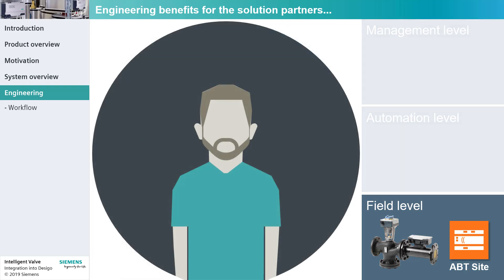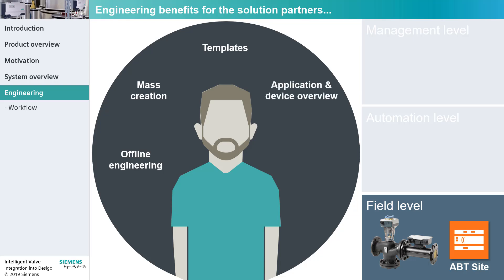Solution partners can benefit from the following features of ABT-Site: offline configuration without a physical connection to the device; mass creation to prepare the network configurations for a larger number of intelligent valves simultaneously; templates to reduce the engineering effort and potential configuration errors; application and device overview to easily keep track of parameters set in the templates; and simultaneous configuration download to multiple valves.